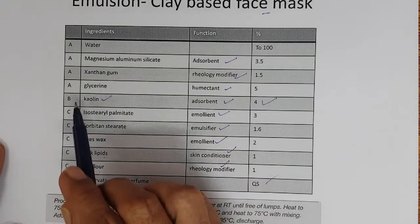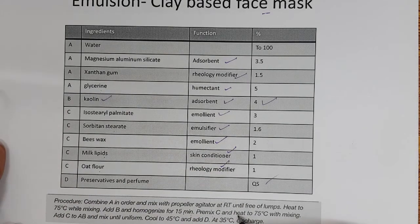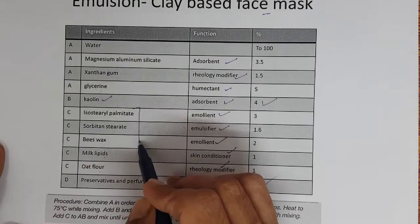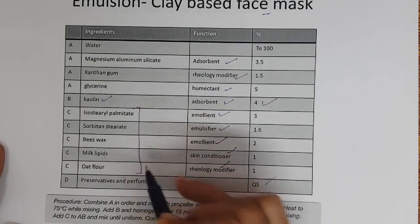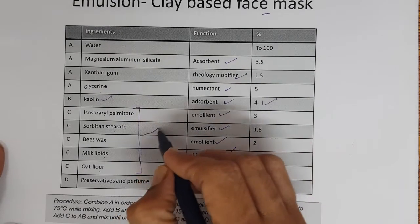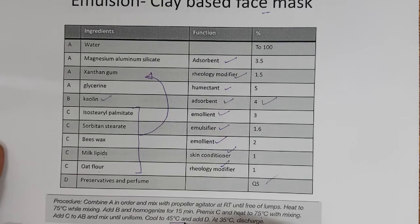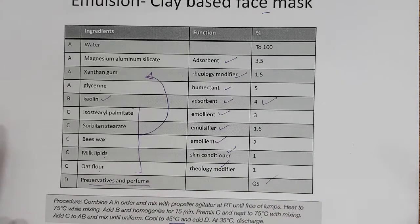Manufacturing: Combine A in order and mix with a propeller mixer, then heat to 75°C. Add B and homogenize for 15 minutes. Premix C separately and heat to 75°C. Add C to A, then mix until uniform. Cool to 45°C. Add preservatives and perfume. Mix until below 35°C. The batch is ready. So here the emollients — isostearyl palmitate, beeswax — are all emulsified in water to make an emulsion-based face mask.